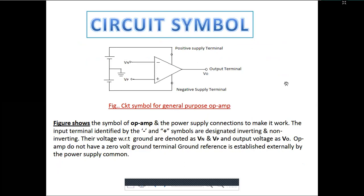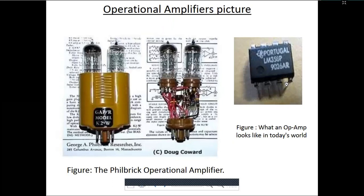The circuit symbol shows positive supply, negative supply, output, V-plus, and V-minus. We apply positive and negative supply to make it work. The figure shows the symbol of op-amp with power supply connections and the output terminal from which we collect the output. The physical picture shows vacuum tubes used before the op-amp, and after 1968 the industry standard op-amp — the IC-741 — was introduced.